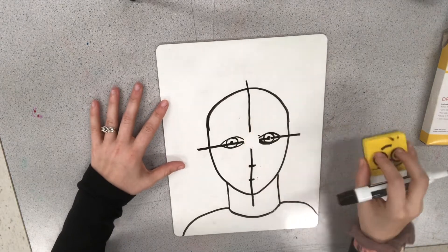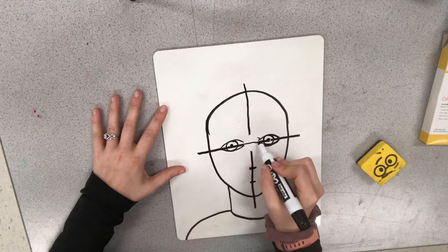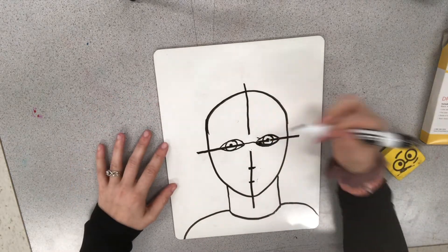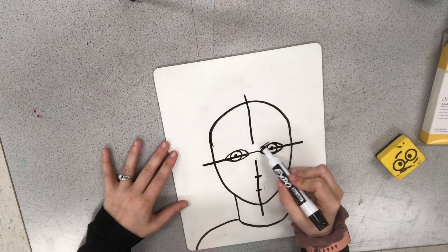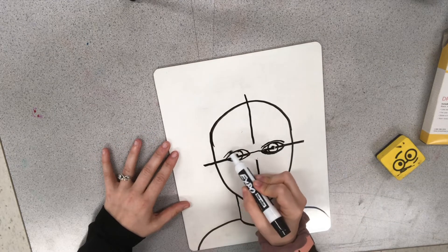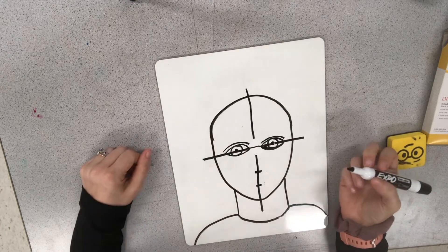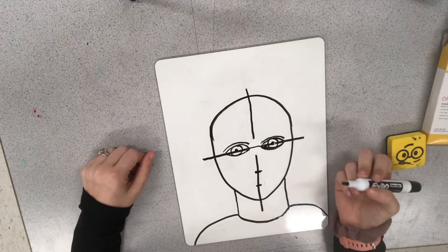Let me erase that. Alright, so we have the basic parts of our eyes here. Let's add in an eyelid if we're trying to get a little fancy. So it's another kind of rainbow line above our eyes. And then we can add in some eyelashes.